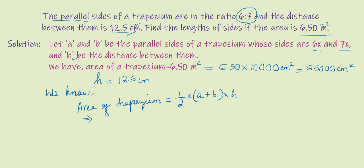Converting from meters to centimeter square, 65,000 equals half times (6x plus 7x) times 12.5. So 65,000 equals half multiplied by 13x times 12.5.